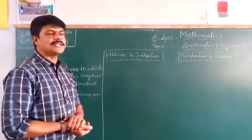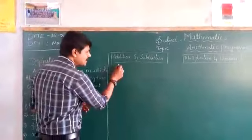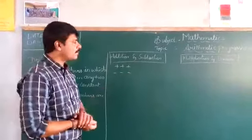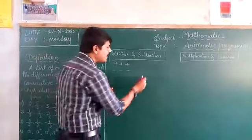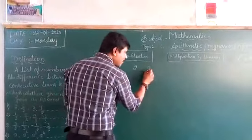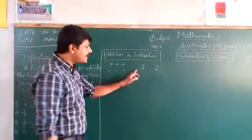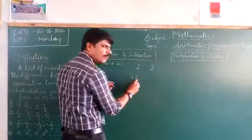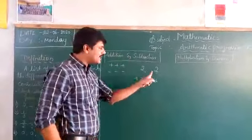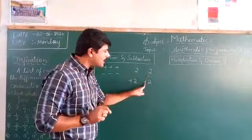Now let me explain what addition is. Addition — for example, if you are given the number 2 to be added with another number 2, when we say just the number 2 with no sign, it is understood as plus 2. When signs are not given, you should think that it is plus 2.